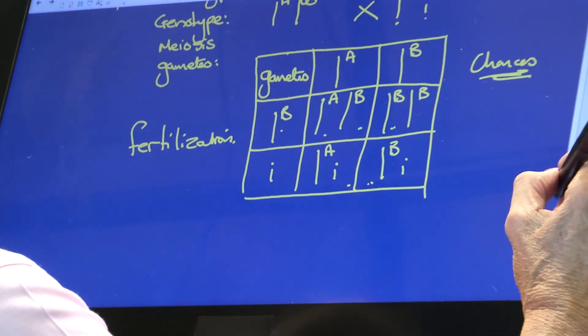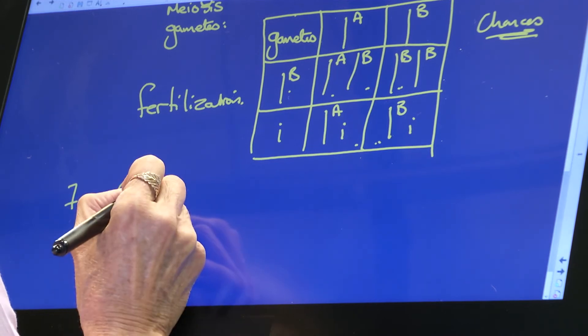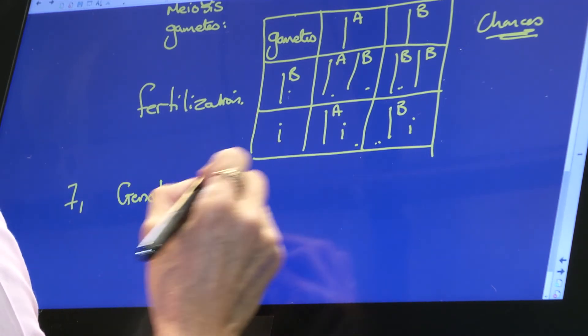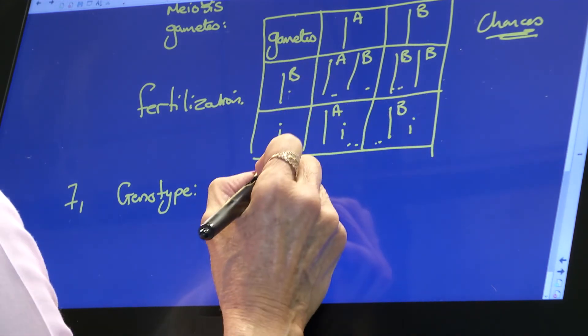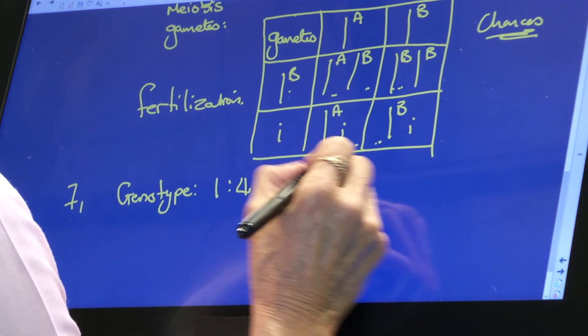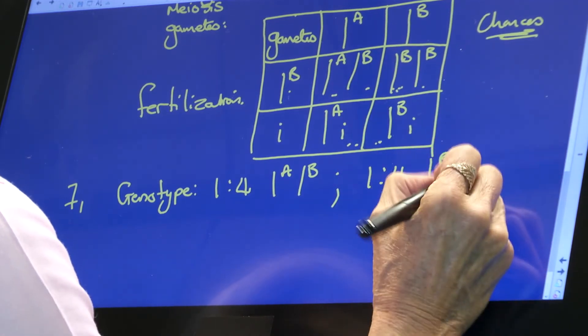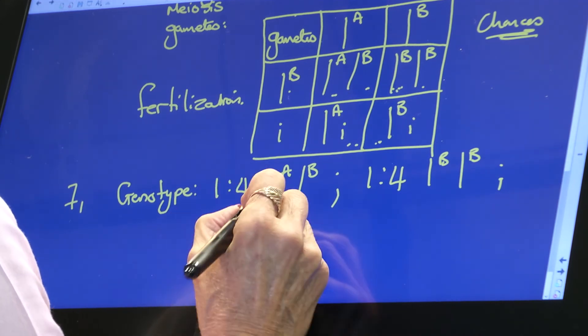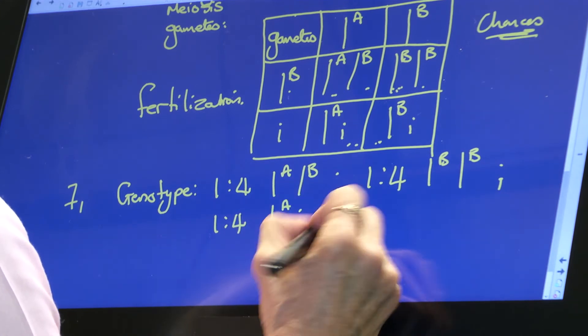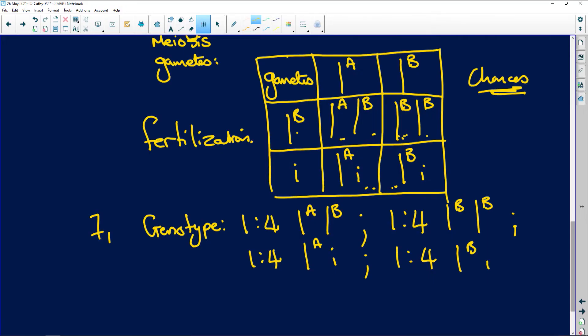But if we do the F1 generation, which is now the first filial generation, we do the genotype. And the genotype is going to be one in four, because there are four options: one in four will be AB, one in four will be BB, one in four will be AI, and one in four will be BI.